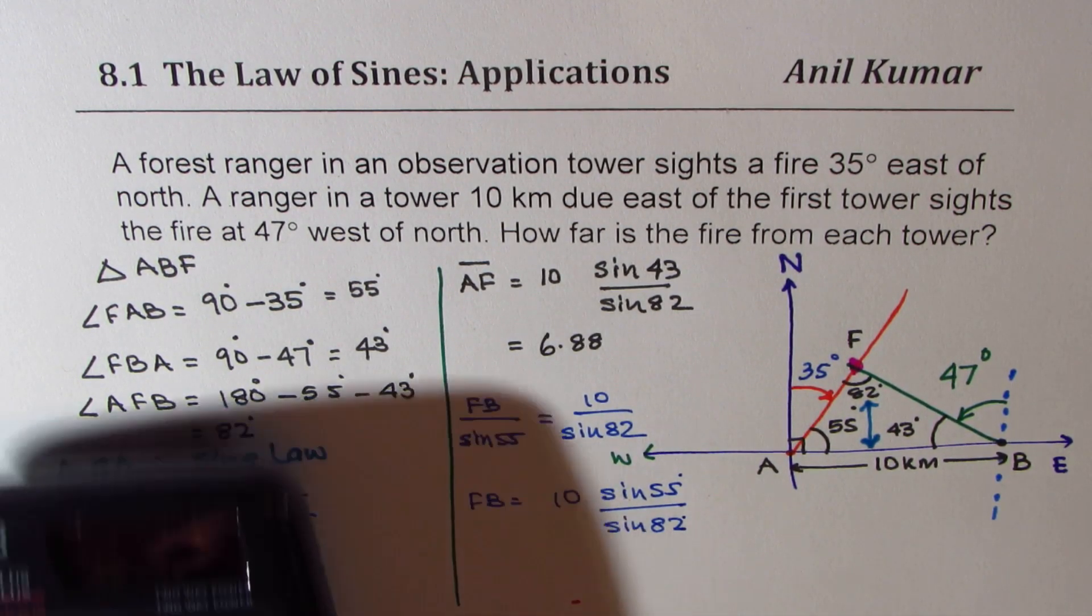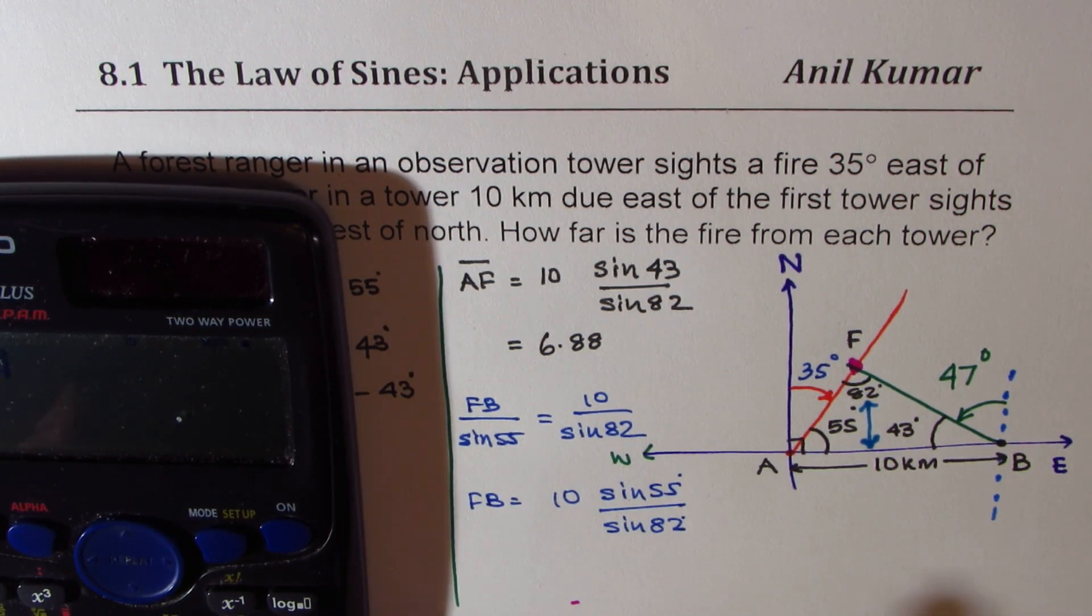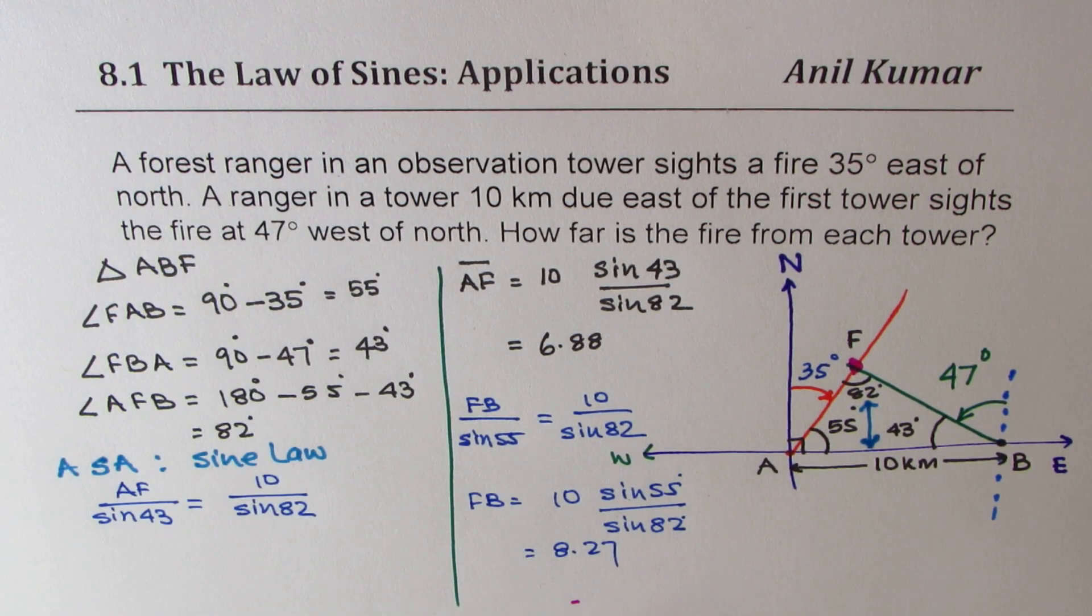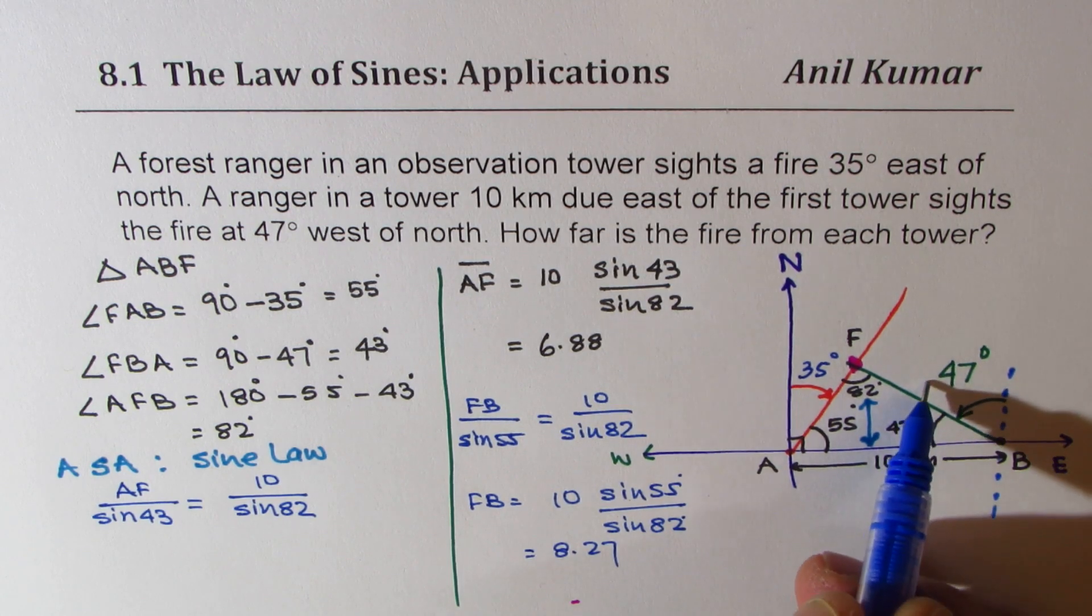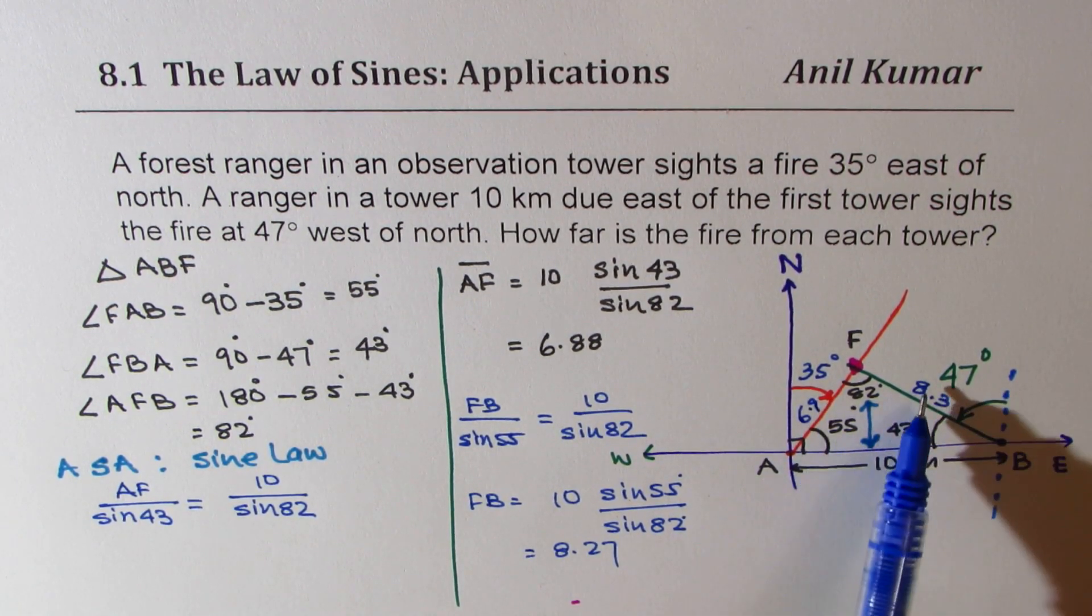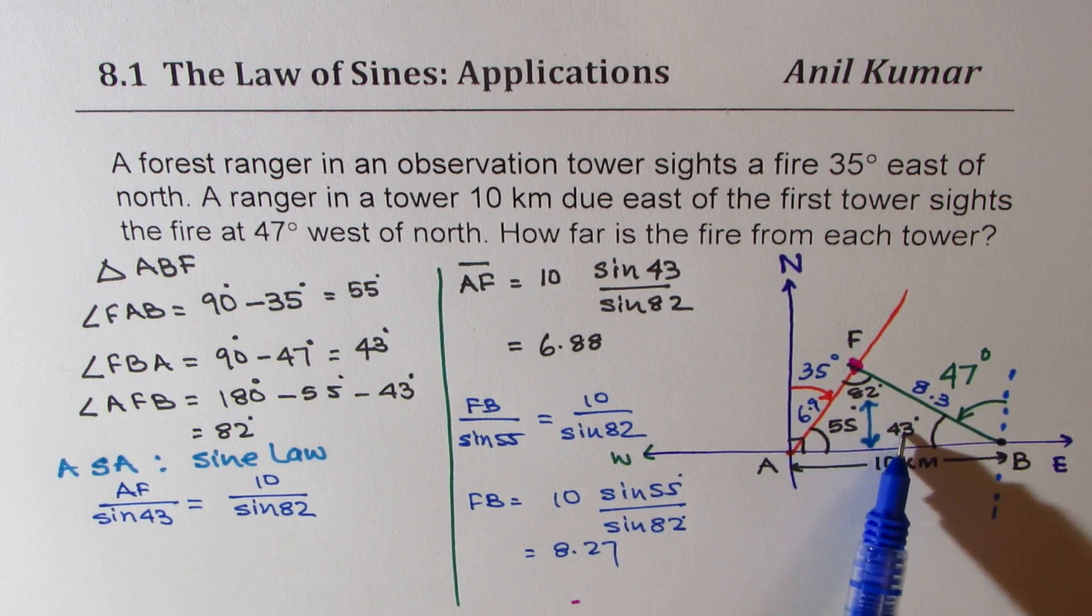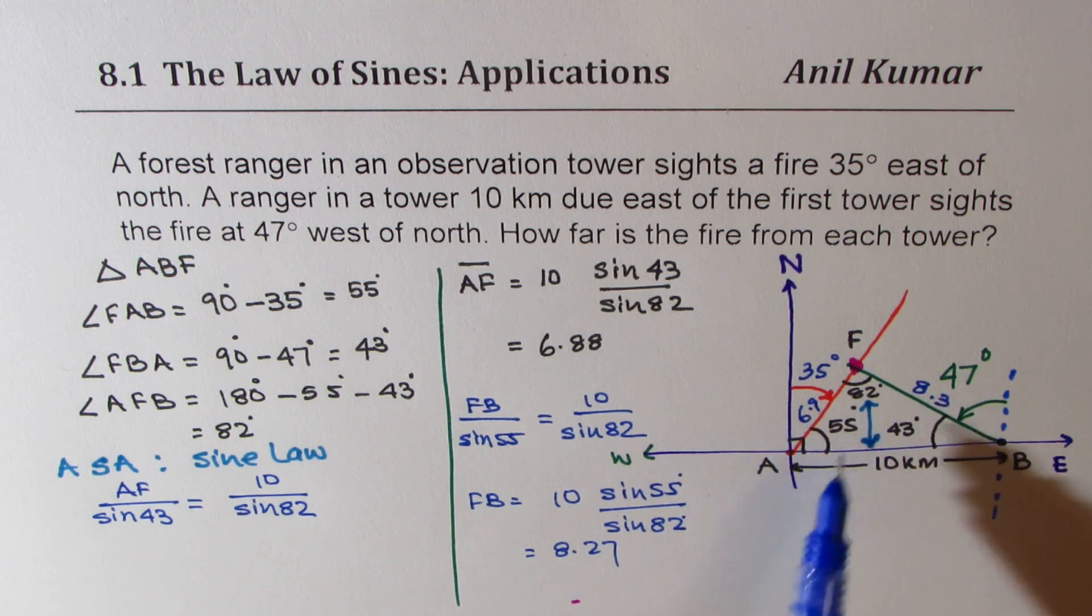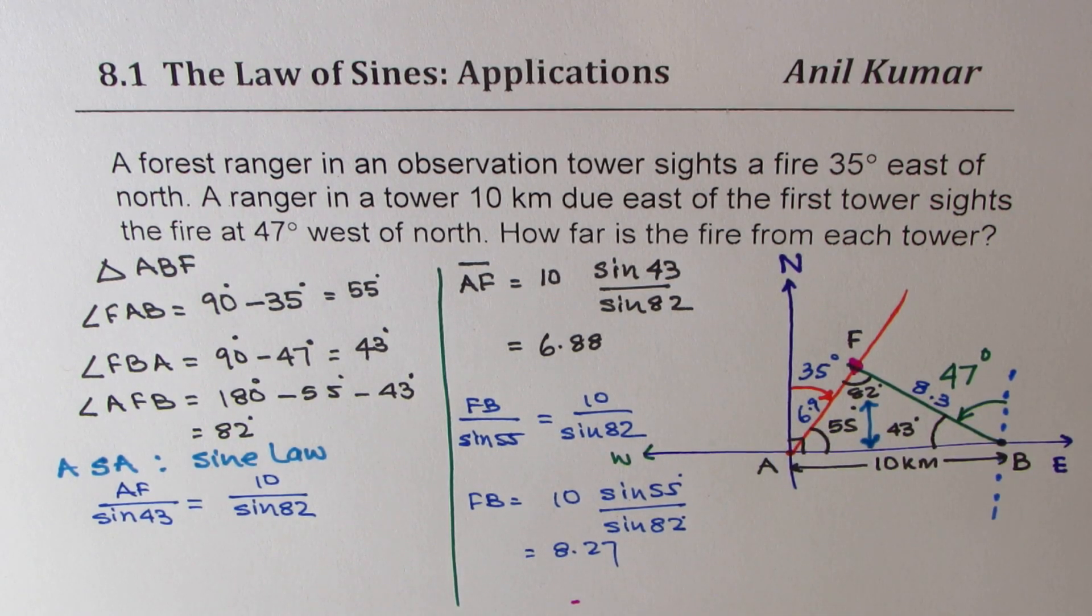So let's calculate this also. It is 10 times sine of 55 degrees divided by sine of 82 degrees, which is equal to 8.27. So this side is, let's say rounded to 1 decimal place, 8.3. The other side is 6.9. So when you compare, the side which is opposite to 55 is greater than that opposite to 43, and the greatest is against 82. So that gives you proportionally that you have the right answer.